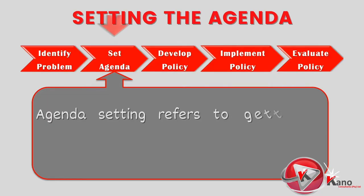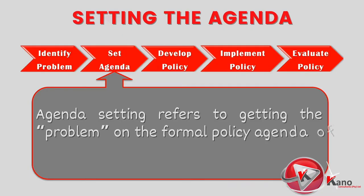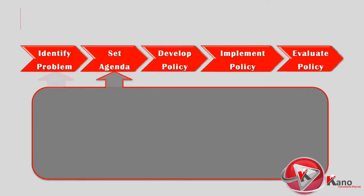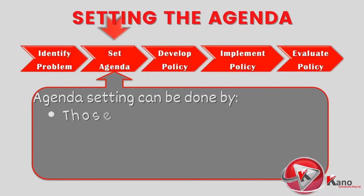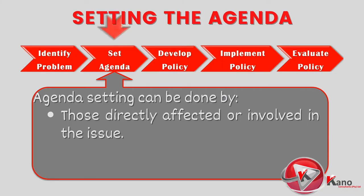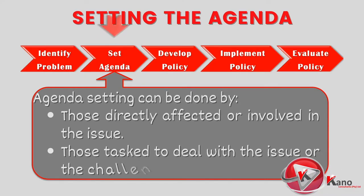The next step in developing a public policy is ensuring that the issue or challenge is put on the agenda. This is where the identified problem is formally placed on government's agenda to be addressed by the president, cabinet members, members of parliament, municipality, or other relevant government institution. The setting of the agenda can be done by those directly affected by the issue, such as ordinary residents, public representatives, and non-governmental organizations, as well as by those tasked with addressing the issue, such as the political party in government, opposition political parties, and public administrators.